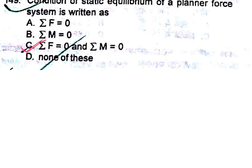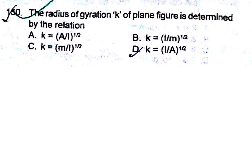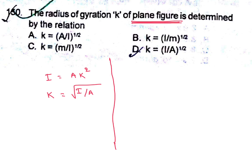The radius of gyration K of a plane figure is determined by the relation. The key word is 'plane figure,' so only area is used. Area moment of inertia I = A·K², so radius of gyration K = √(I/A). If a three-dimensional figure or planar body is given, use mass moment of inertia: I = M·K², giving K = √(I/M). Here for plane figure, K = (I/A)^(1/2), so D is the answer.